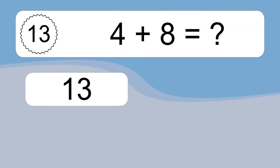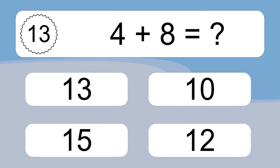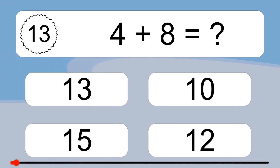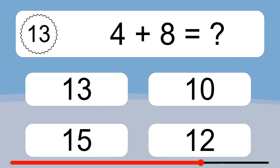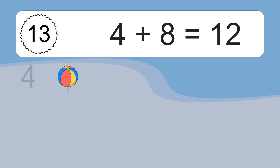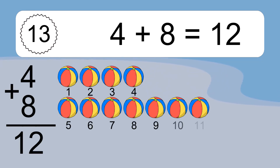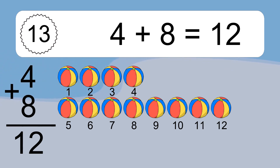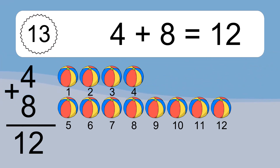4 plus 8 equals what? 4 plus 8 equals 12. Let's count it. 1, 2, 3, 4, 5, 6, 7, 8, 9, 10, 11, 12.